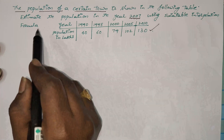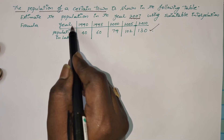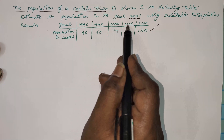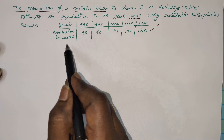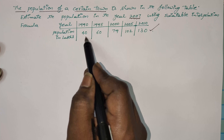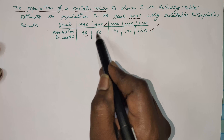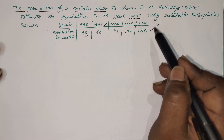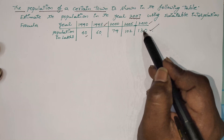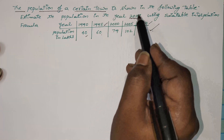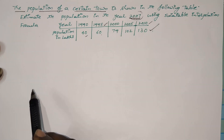Using the suitable interpolation formula. Please observe the given data — in the first row, for every 10 years population is given. In 1990 there are 40 lakhs people in the town. In 1995, 60 lakhs people. And so on — in 2010 there are 130 lakhs people in the town. We have to estimate the population in the year 2007.